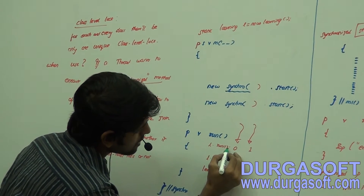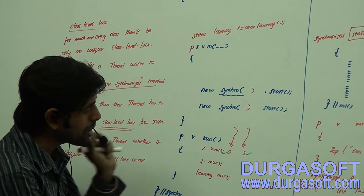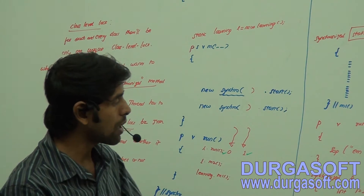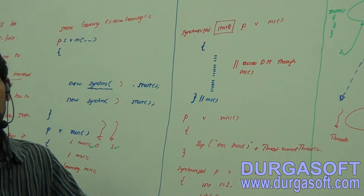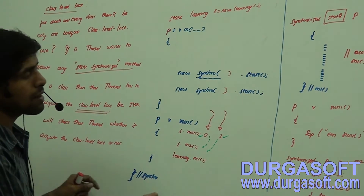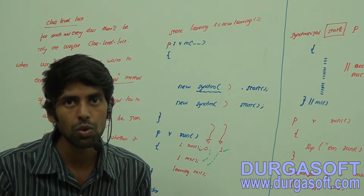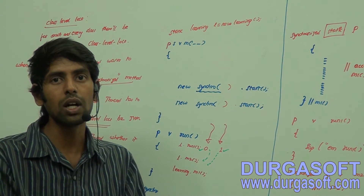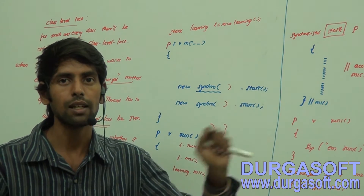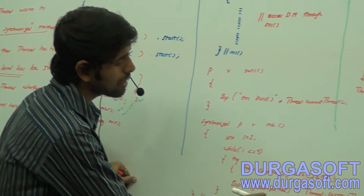Think that thread one has completed the runOne method and thread zero has also completed it. Now thread zero is entering and executing the m2 method. What is m2? It is a synchronized instance method. In order to execute that method, whichever thread comes first has to acquire the object-level lock, and the other thread has to wait — JVM will not allow it to execute.